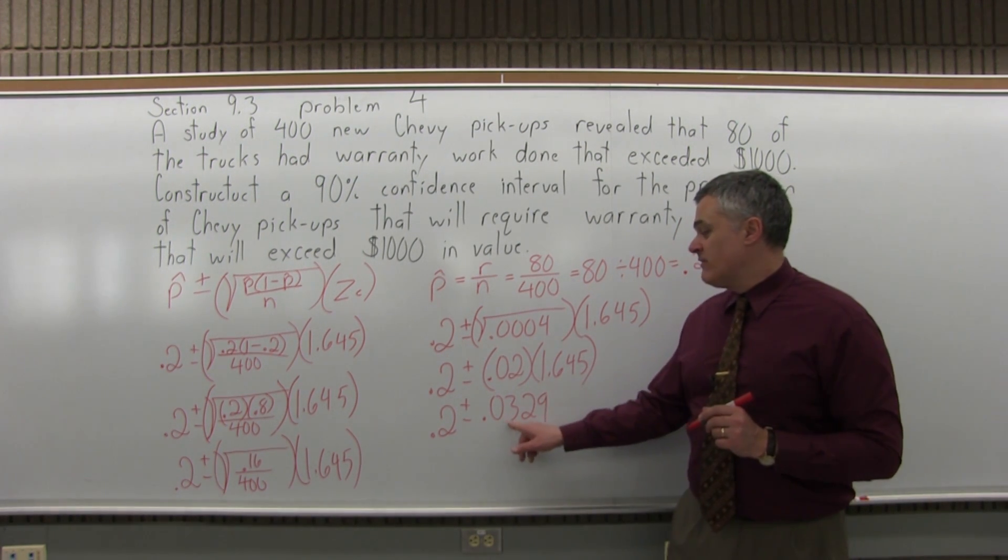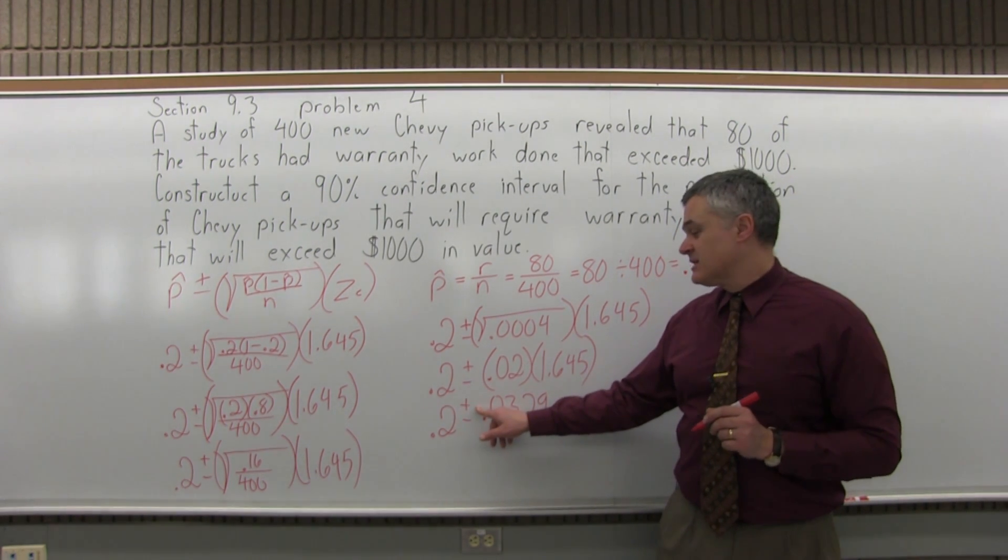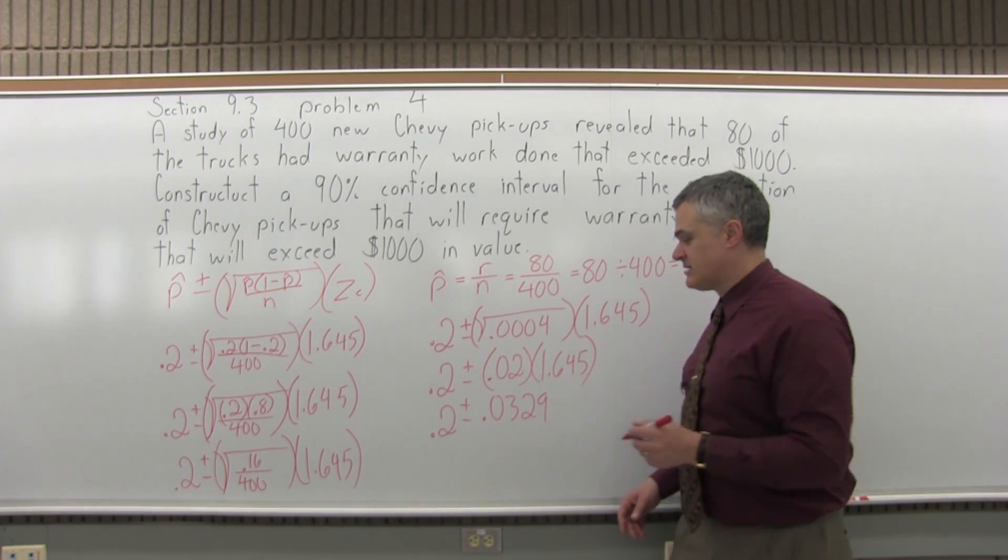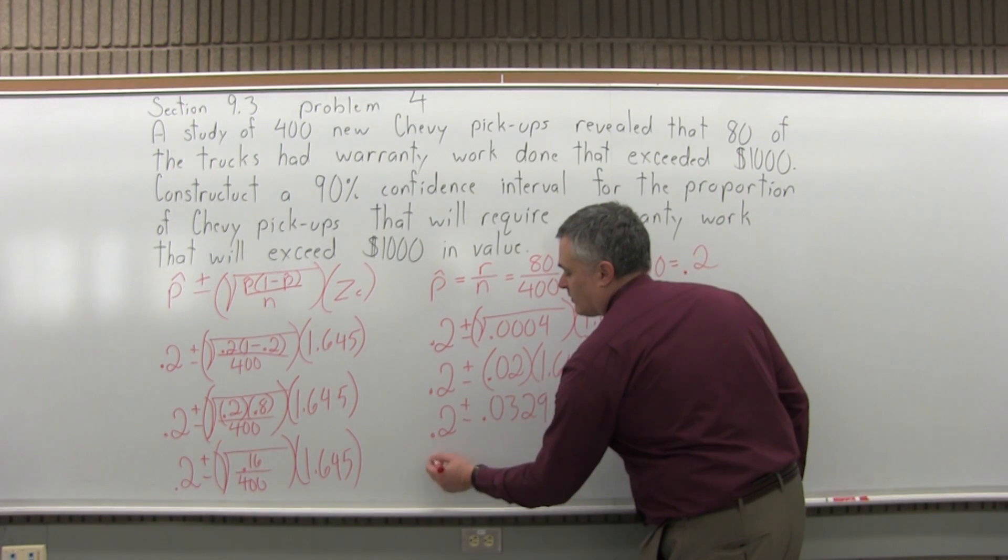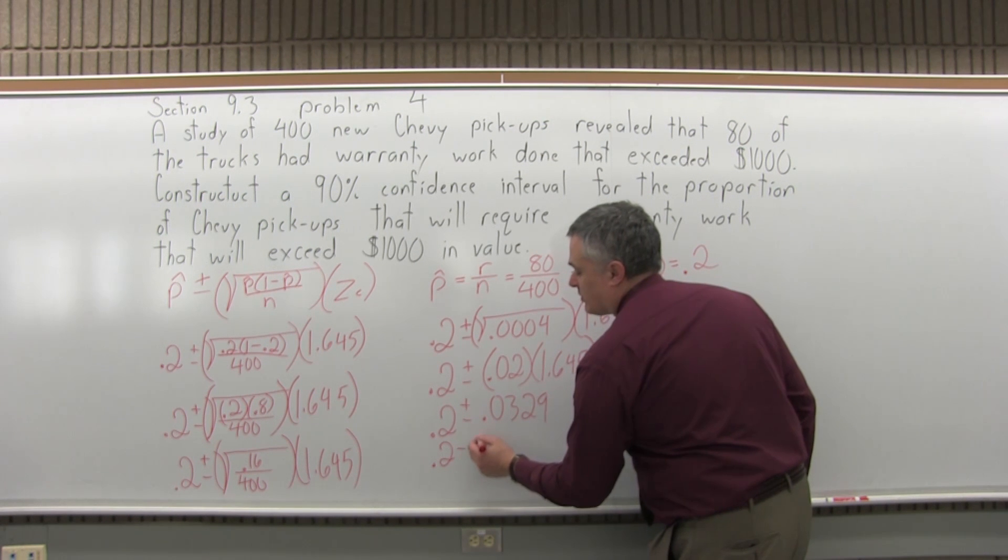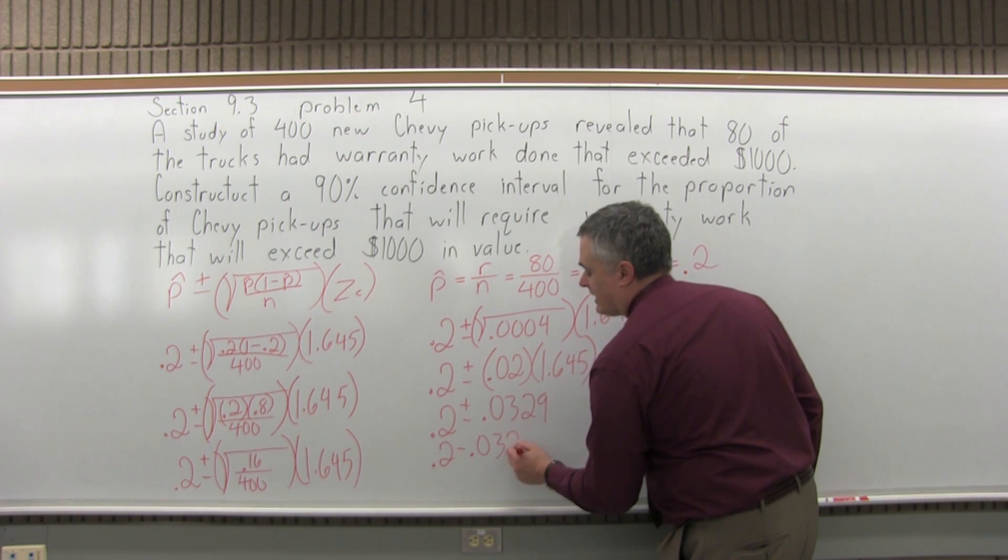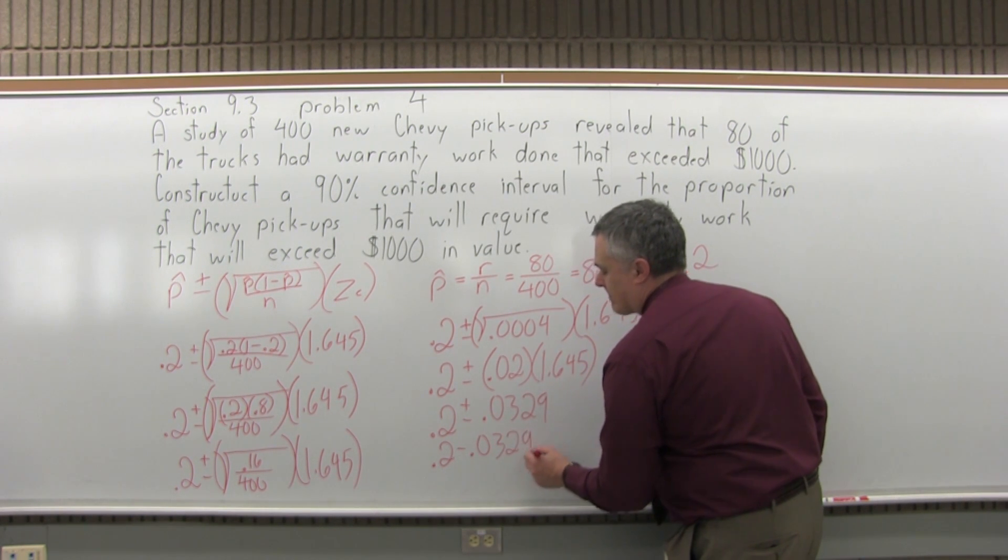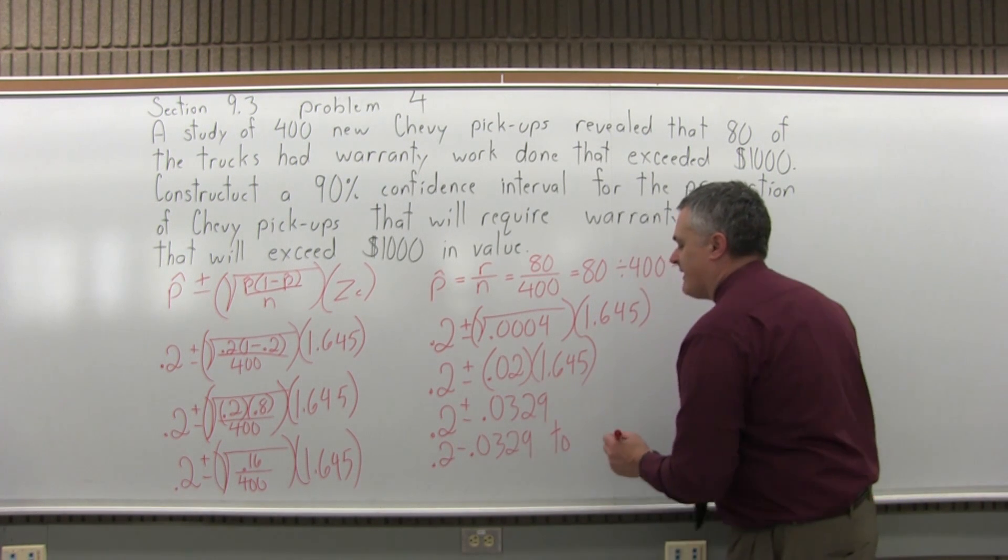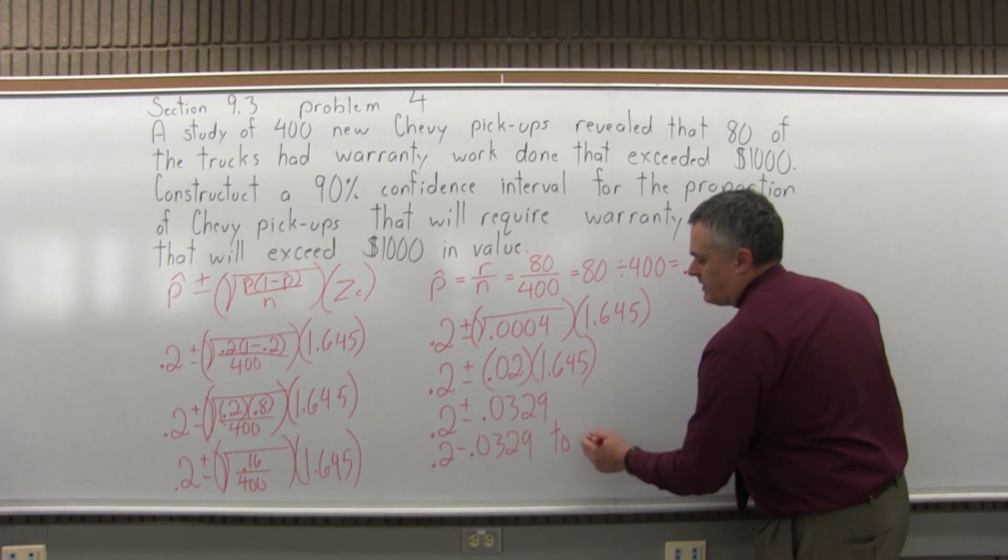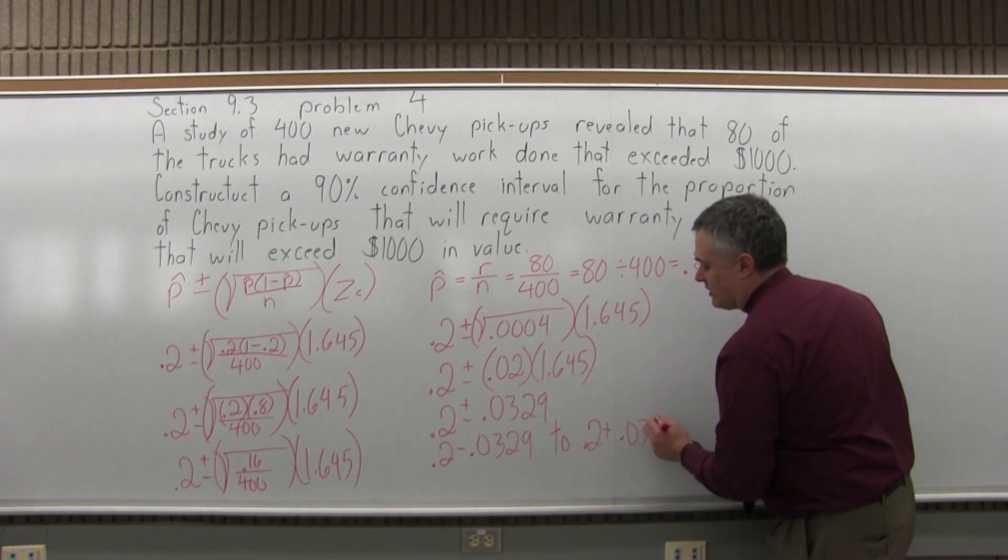So now that I have one value after my plus and minus, I can split my interval into a separate minus and a separate plus. So the low end of my interval will be 0.2 minus 0.0329. And the upper end will be 0.2 plus 0.0329.